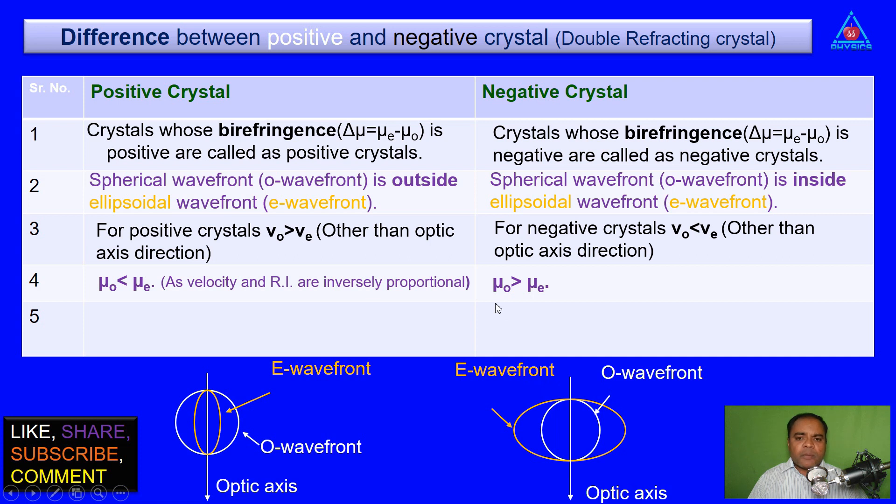Exactly opposite in negative crystal, μO is greater than μE. As velocity, and lastly examples: positive crystal examples are quartz, ice, and negative crystal examples are tourmaline crystal, calcite crystal, etc.